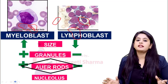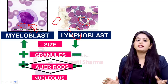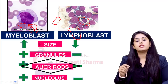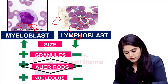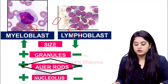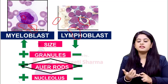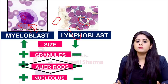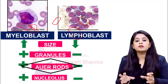Lastly, considering the nucleolus — which nucleus will have a nucleolus? Everything has to be more in a myeloblast. If you focus on the nucleus, you see this round area inside — this is a nucleolus. Do you see that area in a lymphoblast? No. So everything more: size more in myeloblast, granules in myeloblast, Auer rods in myeloblast, nucleolus in myeloblast. These two images will form a basis for a lot of disorders we will do going forward.